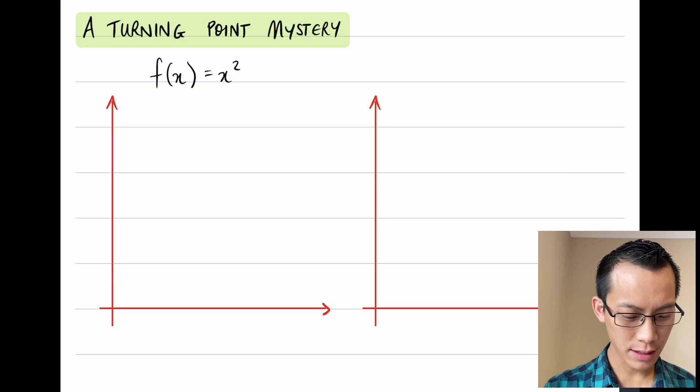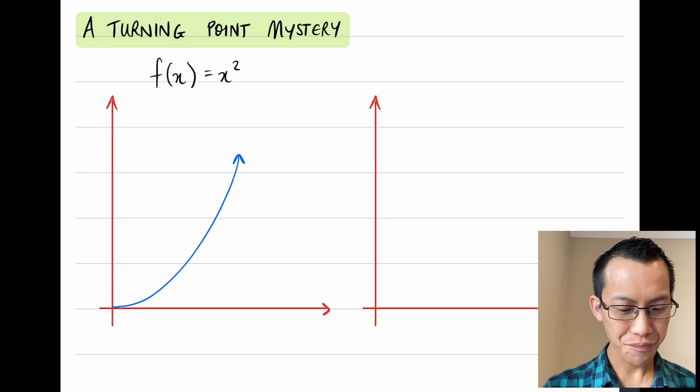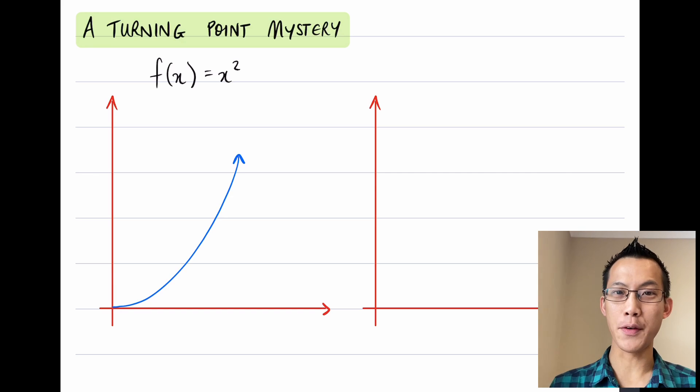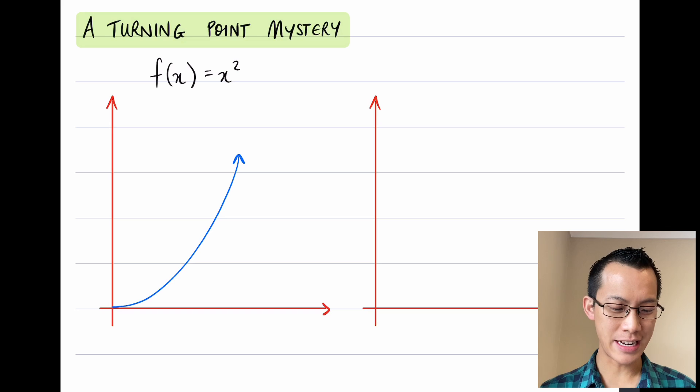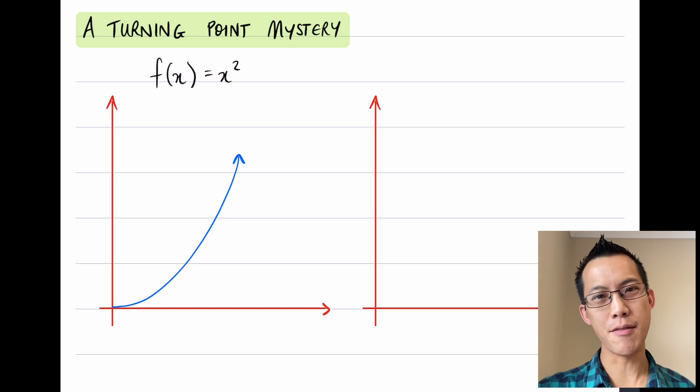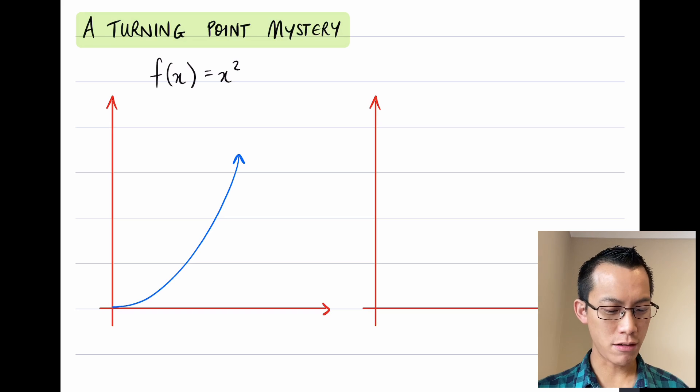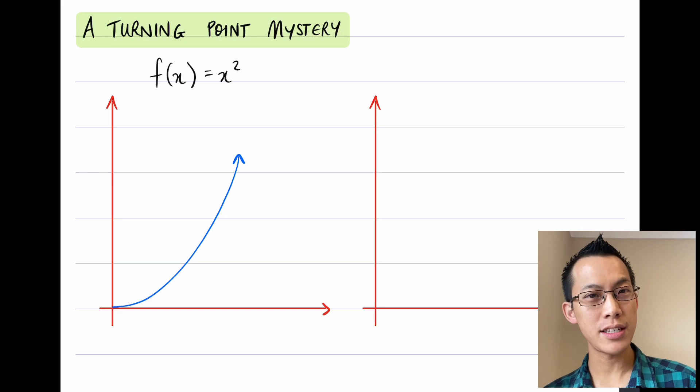Very roughly, I think it's going to look something like this. Now the important thing about this familiar parabola shape that I want to draw your attention to is in this domain, it's an increasing function all the way. There's no turning point in this domain where it becomes a decreasing function.